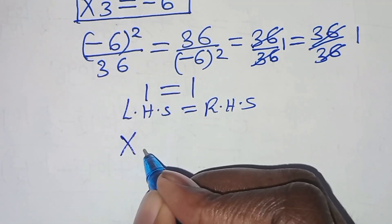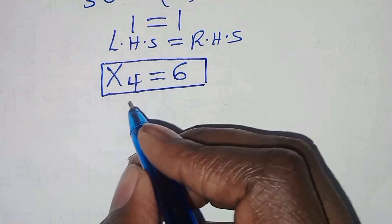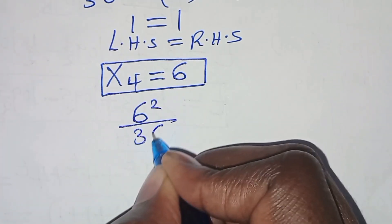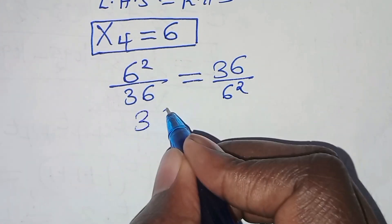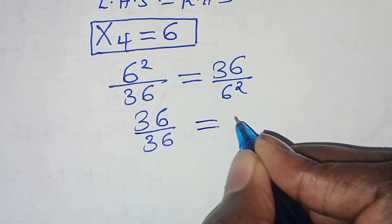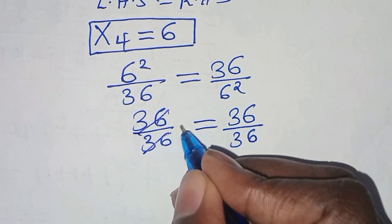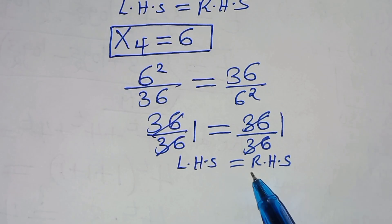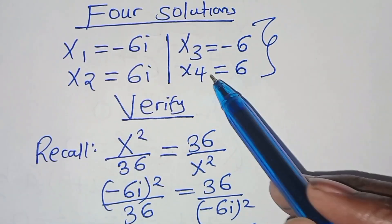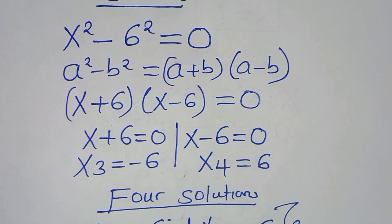Finally, let's verify x₄ equals 6. We have 6 squared over 36 equals 36 over 6 squared, which gives 36 over 36 equals 36 over 36, simplifying to 1 equals 1. The left-hand side equals the right-hand side. All four solutions x₁, x₂, x₃, and x₄ satisfy the equation. Please follow the steps, like this video, and subscribe — see you in the next video.